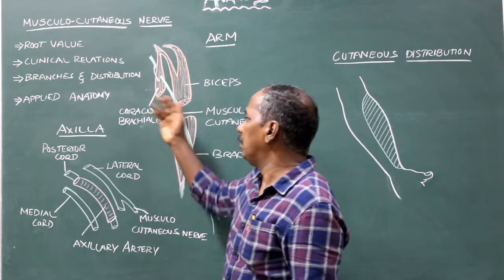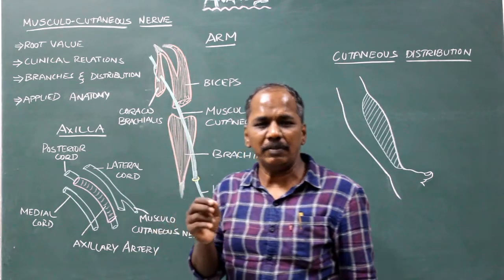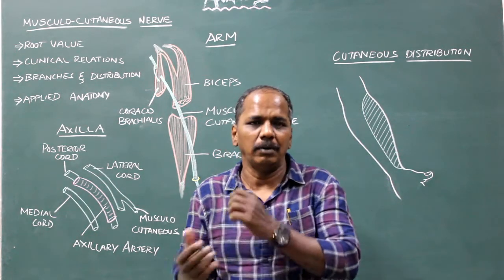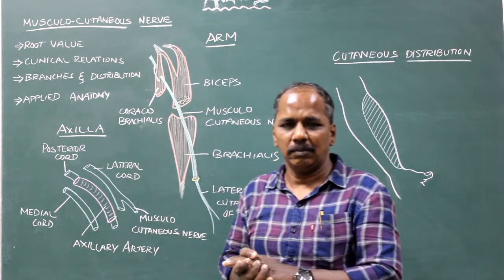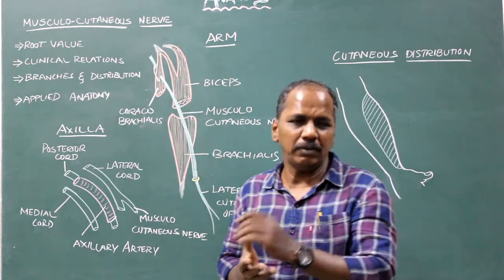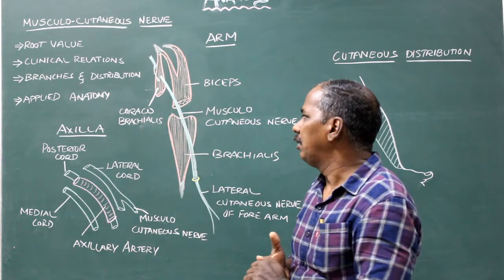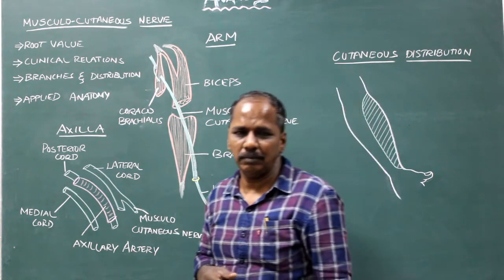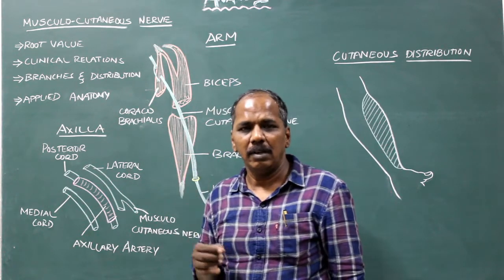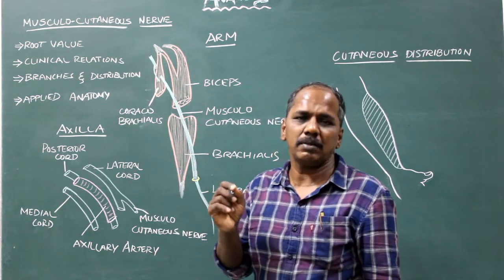Musculocutaneous nerve. It is the chief nerve of the anterior compartment of the arm. It is the nerve of the lateral cord of brachial plexus. Root value: anterior primary rami of C5, C6, and C7 spinal nerves.